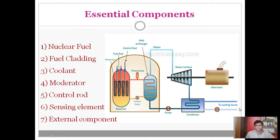In the working of a nuclear power plant, nuclear fuel — uranium-235 or plutonium — is surrounded with cladding and moderator. Fuel bundles with control rods inserted in between are placed in a coolant. The coolant transfers heat to the heat exchanger, where water is boiled to generate steam, which rotates a turbine to generate electricity. This is the complete working principle of a nuclear power plant.